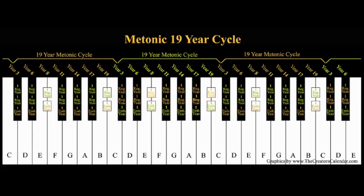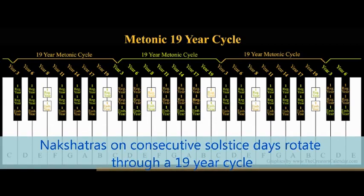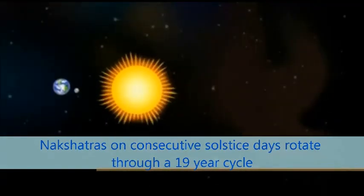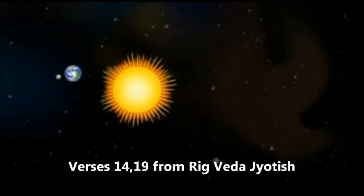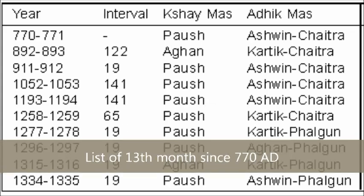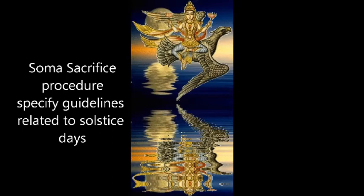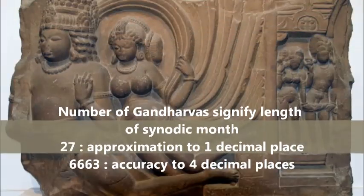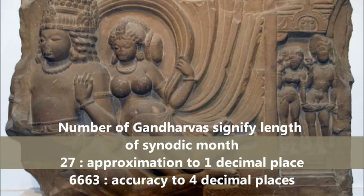A more refined 19-year cycle predates the Metonic cycle attributed to the Greeks by over 2 millennia. The 19-year cycle is an interesting example of cryptic coding in mantras of the knowledge of Vedic astronomy. The idea of a 13th full moon in a year is more ancient and is expressed as a parable in mantras related to the Soma sacrifice and to the Gandharvas. Related mantras provide cryptic phrases which decode into precise estimates of the lengths of synodic and sidereal months.